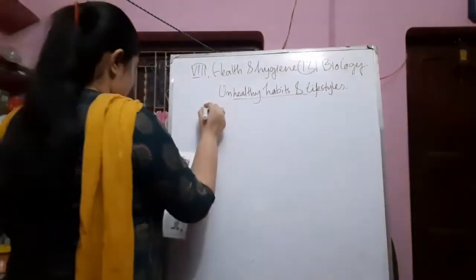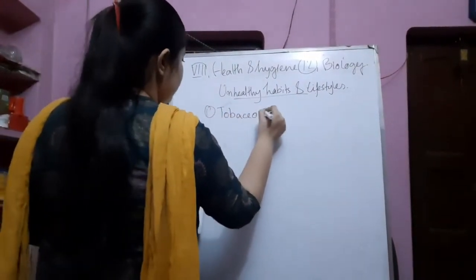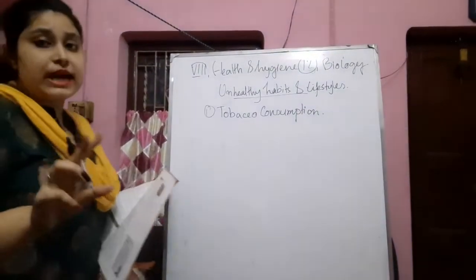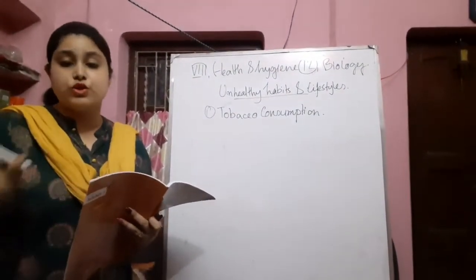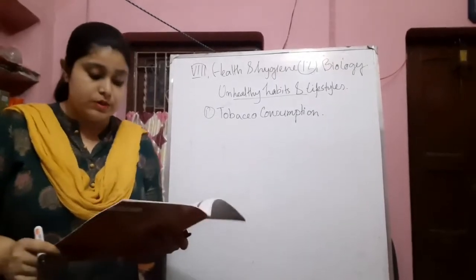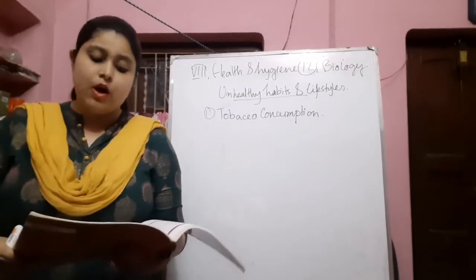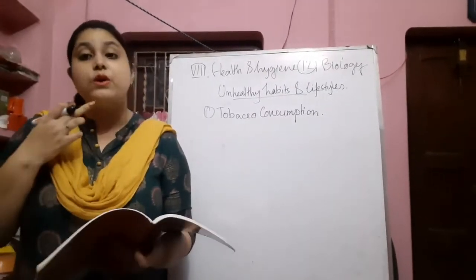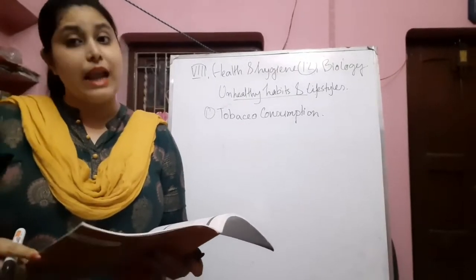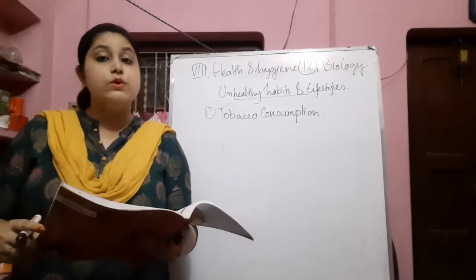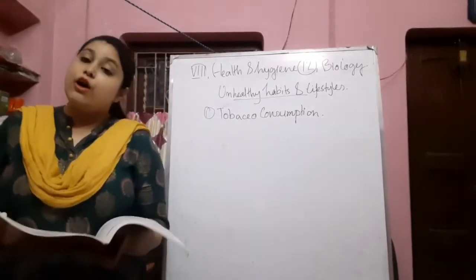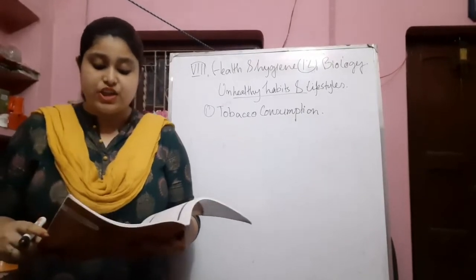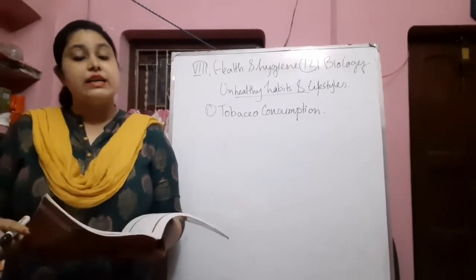First, we are going to discuss about tobacco consumption. Tobacco can be of two types: one is smoking tobacco and the second is non-smoking or chewing tobacco. Tobacco is consumed by chewing or by smoking as cigarettes or beedis. Chewing tobacco can lead to oral cancer — cancer of the throat and the mouth — and also lung cancer. Smoking causes irritation of the nose and throat, cough, and damage to the respiratory tract and lungs.